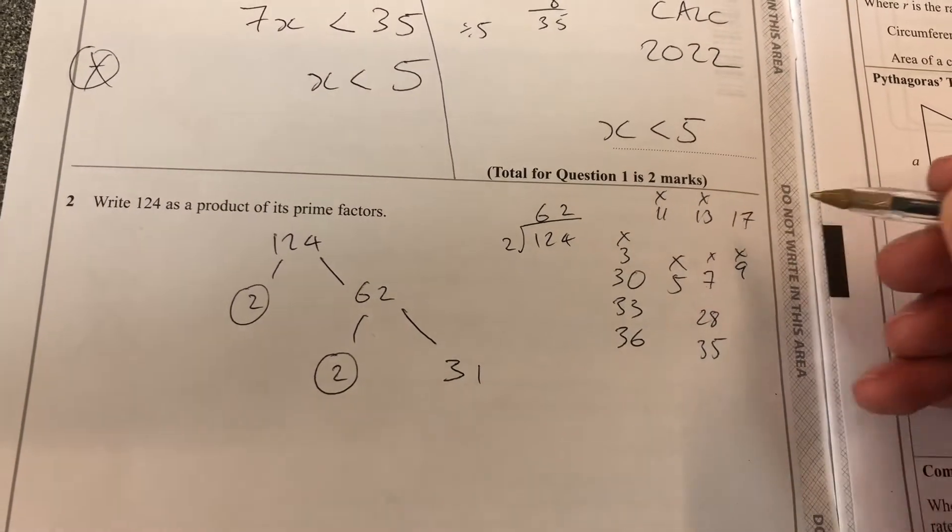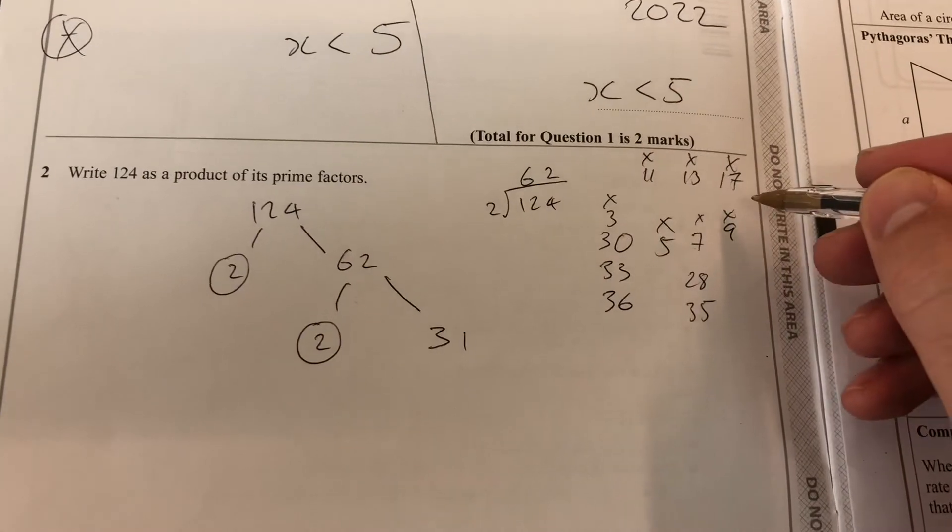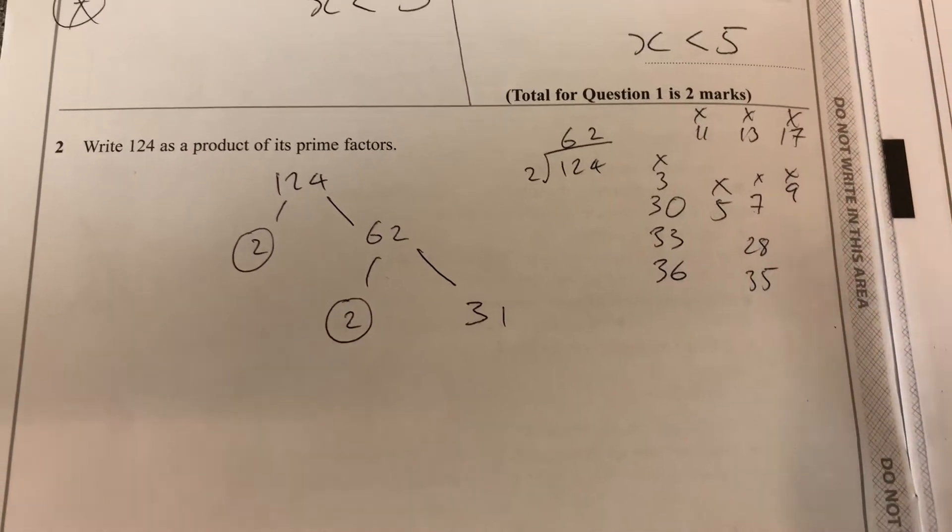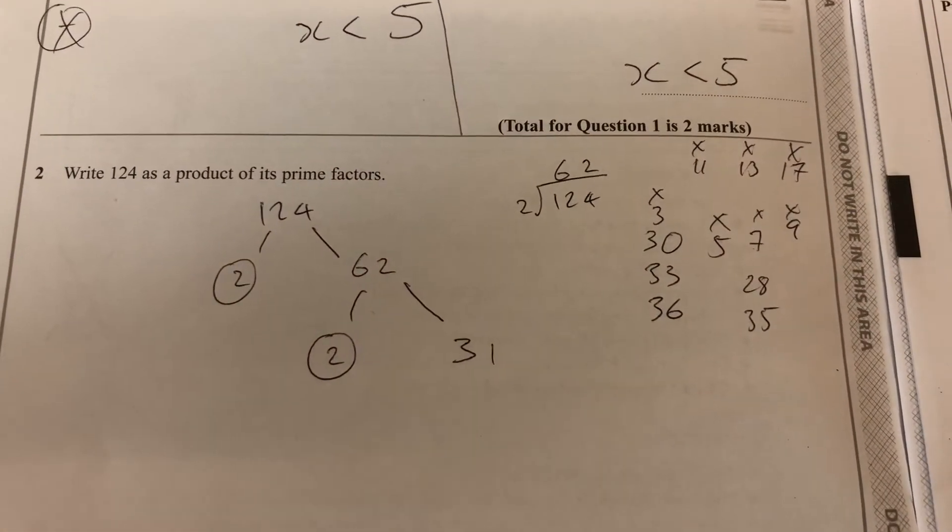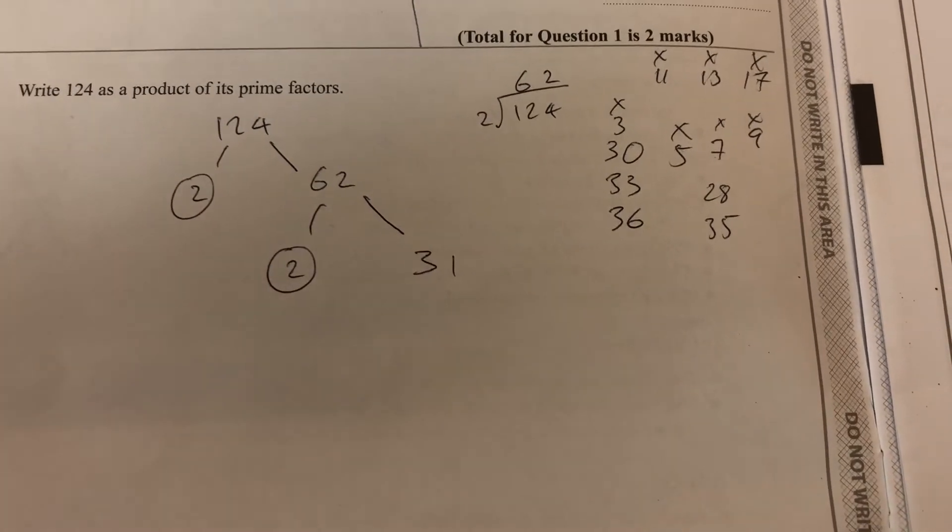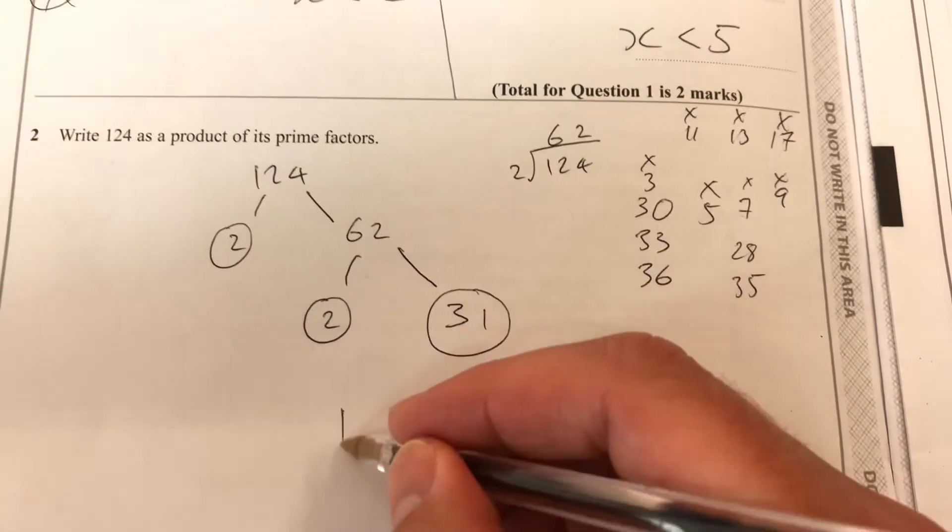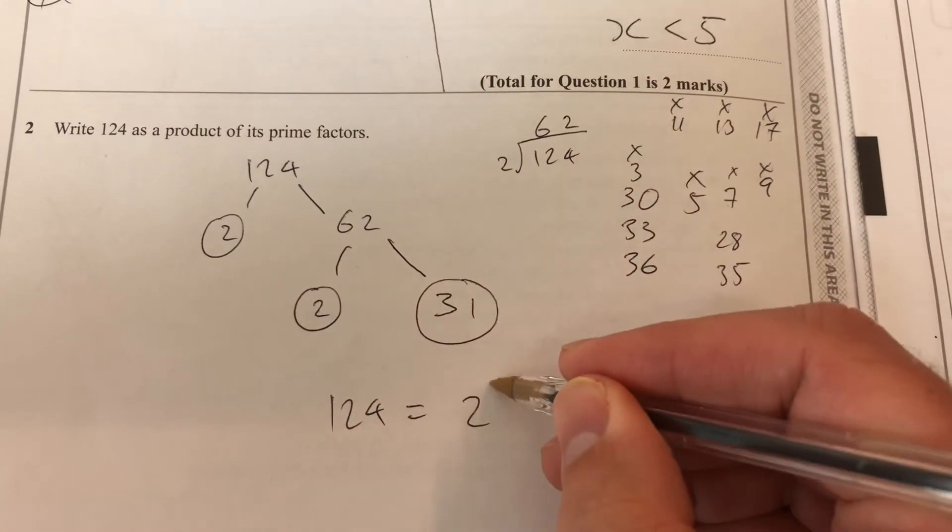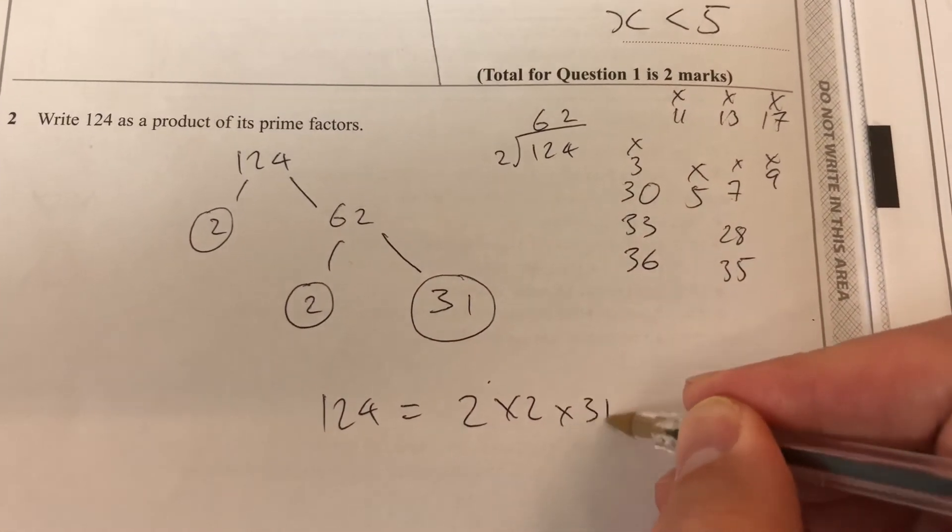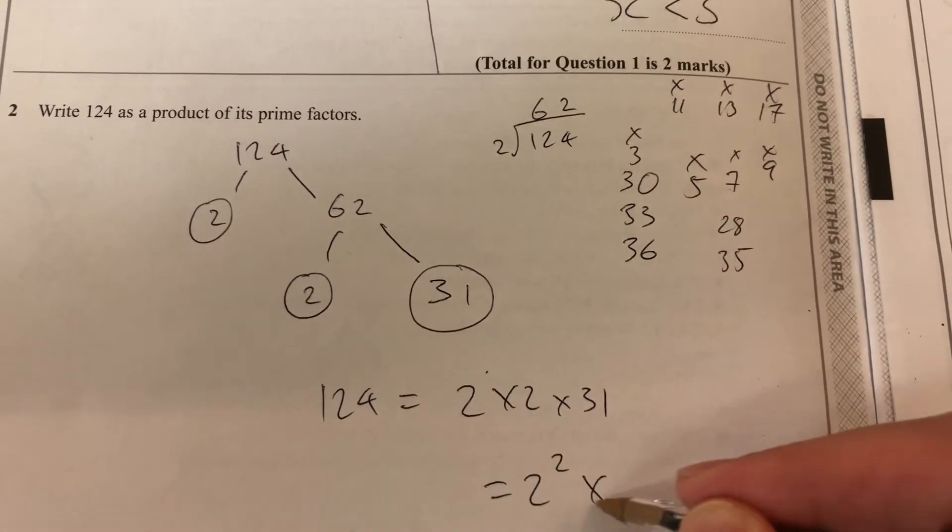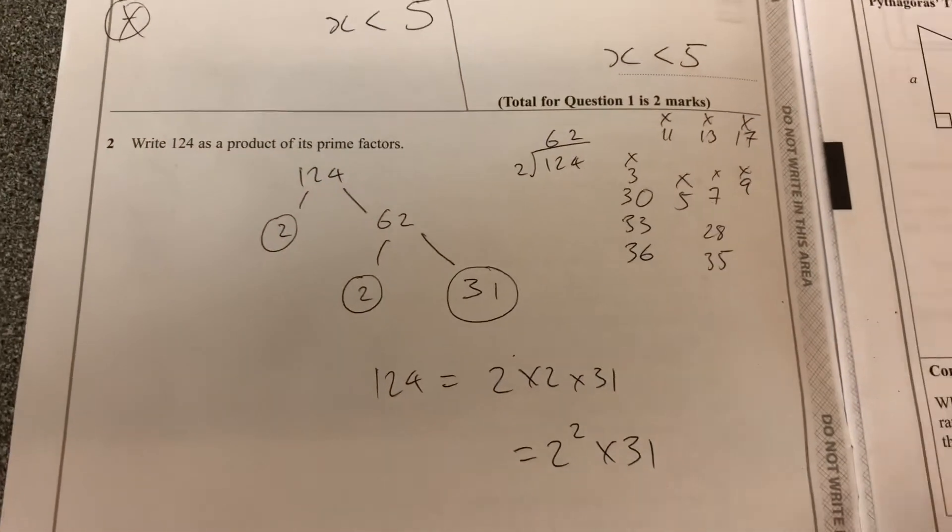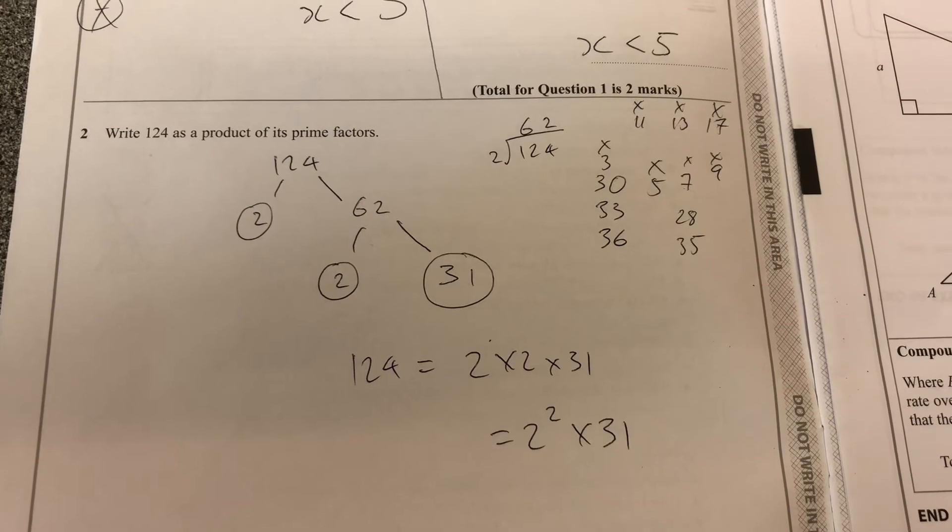17, I know 17, and then 34, so it's not 17. 19 would give me 38, so if I'm not sure, I might just take a stab and say what I think is correct, which means 124 is 2 times 2 times 31. 2 squared times 31. Okay, maybe I'm wrong, but I'm going to hazard a guess there.